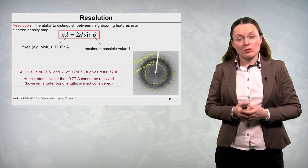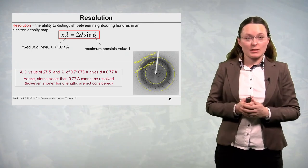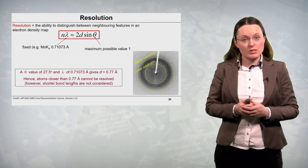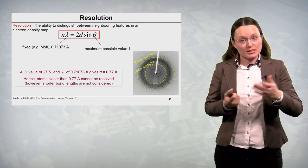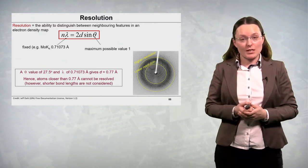So the atoms which would be closer than 0.77 angstroms could not be resolved from each other. But typically we do not consider lower distances.